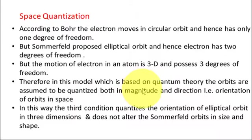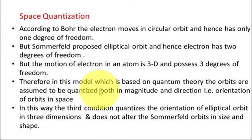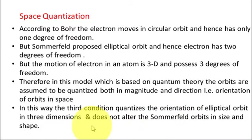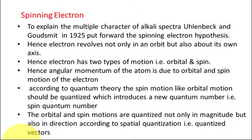The electron has three degrees of freedom. From this, you can understand that spatial quantization means the different quantum numbers can be quantized both in magnitude and direction. The third condition quantizes the orientation of the elliptical orbit in three dimensions and does not alter the Sommerfeld orbits in size and shape — the elliptical orbits and their shapes are not disturbed. This proved space quantization, a concept brought by the vector atom model.